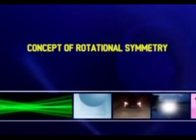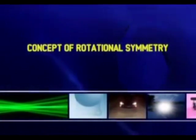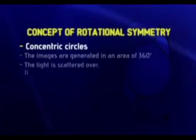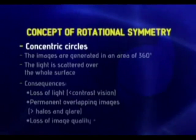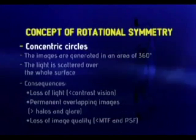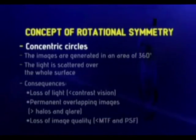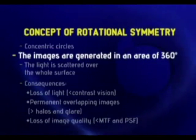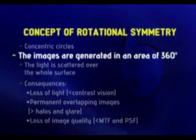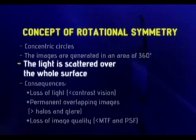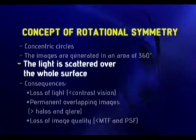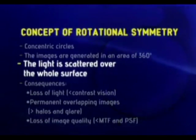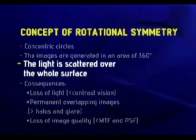Up to now, all of the intraocular lenses that have appeared on the market are based on the rotational symmetry concept. They are made with concentric circles, either refractive or diffractive, which provide images generated in an area of 360 degrees. The light is scattered on the foci over the entire lens, causing the following main disadvantages.